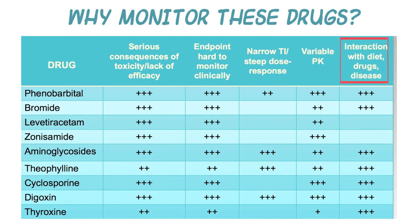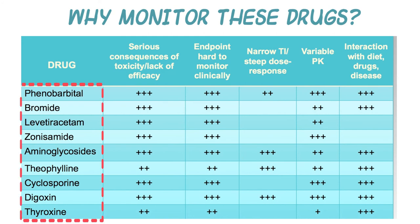The most common drugs currently being measured via therapeutic drug monitoring in veterinary medicine reflect the key reasons for monitoring: serious consequences of toxicity, difficulty measuring the clinical endpoint, narrow therapeutic index, variable pharmacokinetics, and potential for drug interactions. These include anti-epileptics such as phenobarbital, primidone (where phenobarbital is measured), bromide, levetiracetam, zonisamide, and benzodiazepines; antimicrobials such as aminoglycosides — gentamicin and amikacin; immunosuppressants like cyclosporine; cardiac drugs like digoxin, phenytoin, procainamide, and quinidine; and hormones. We often forget that levothyroxine is measured to prevent both underdosage and toxicity — particularly in large dogs, causing signs of hyperthyroidism.